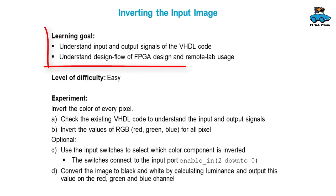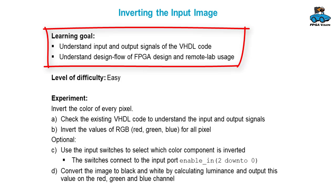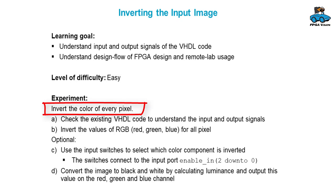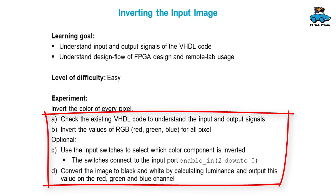You can also make experiments that do not use the lane detection but simply use the video input and video output of the remote lab, doing general signal processing. We start with a very easy example: have a look at the existing VHDL code and try to understand the input and output signals of the entity. Then you can write a circuit that inverts the color for every pixel — use the existing VHDL code as a template and invert the values for red, green, and blue for all pixels. Additionally, you could use the input switches to control which color you want to invert, using the input port for the three switches. Or you could convert the image to black and white by calculating luminance and giving that luminance value to the red, green, and blue channels.